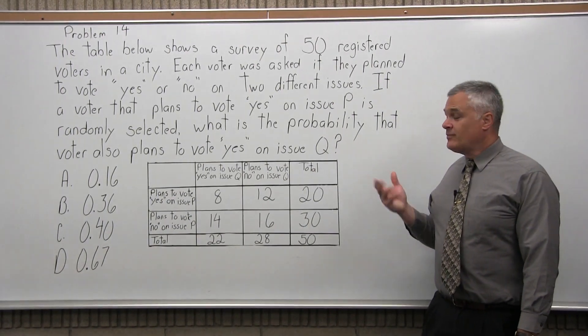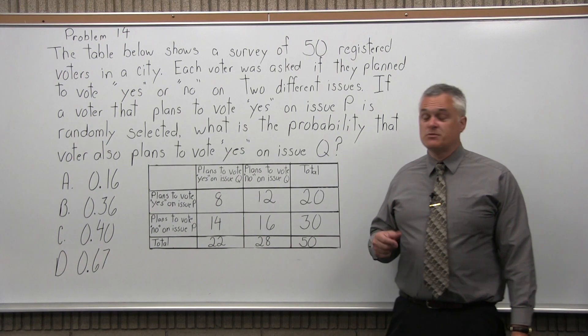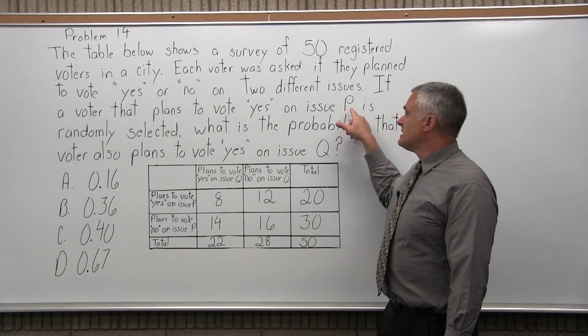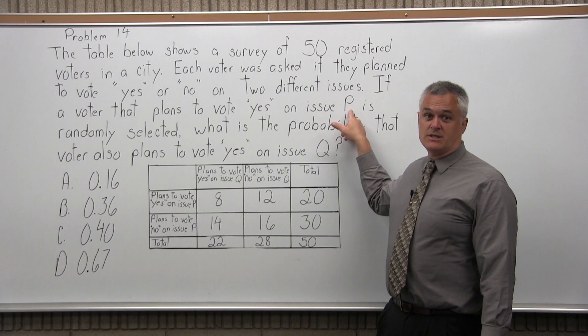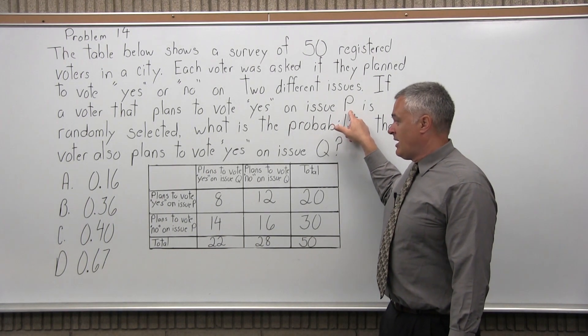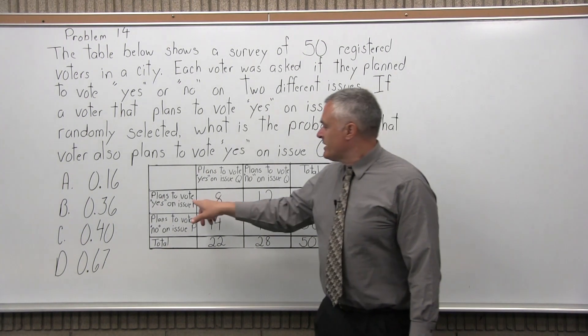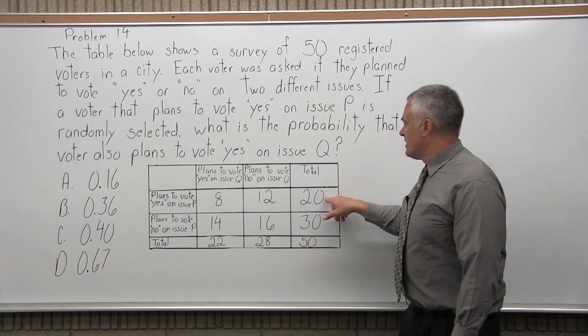So, 50 voters all together, two issues, P and Q. They say if you randomly select a voter that's going to vote yes on issue P. So if you look, here's issue P. The people who are going to vote yes,